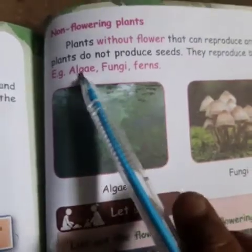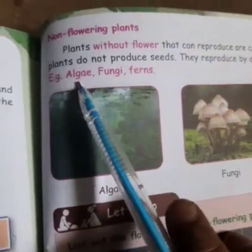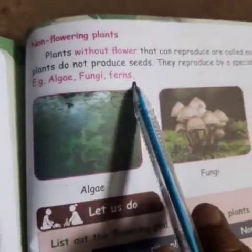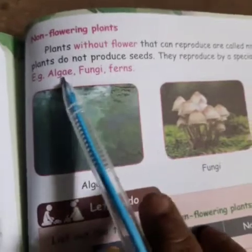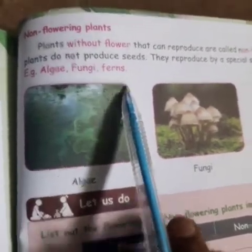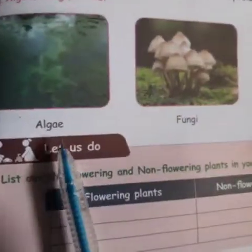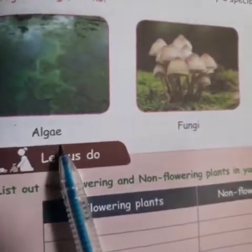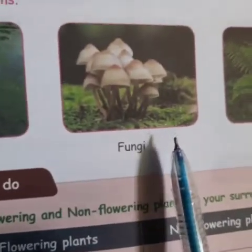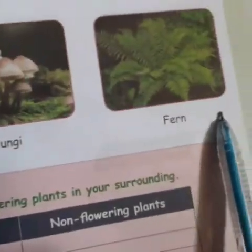Examples of non-flowering plants include algae, fungi, and ferns — pasigal, poonjigal, atru perani. It is one of the algae; it is one of the fungi; it is one of the fern.